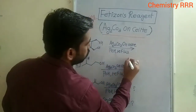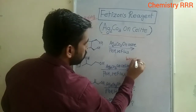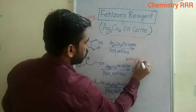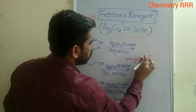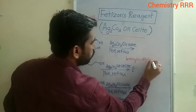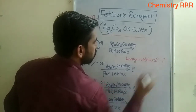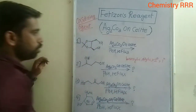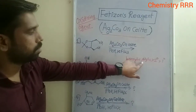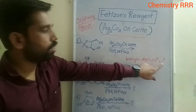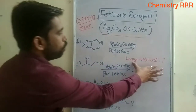It oxidizes selectively. The order of oxidation is: benzylic first, then allylic, then secondary alcohol, and lastly primary alcohol. This is the order of oxidation — benzylic, allylic, secondary, and then primary alcohol.